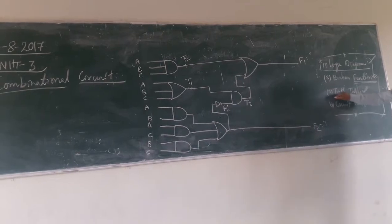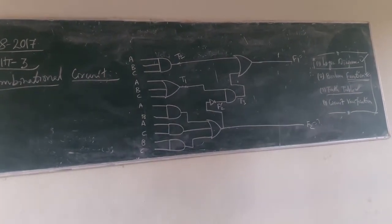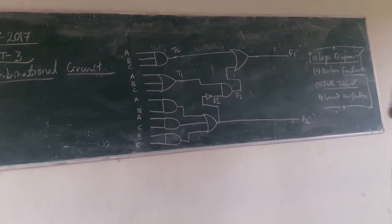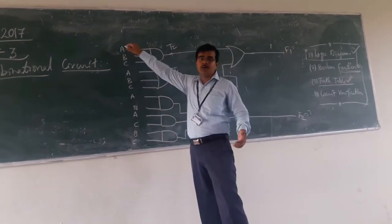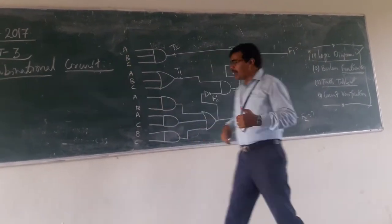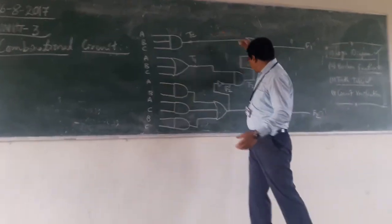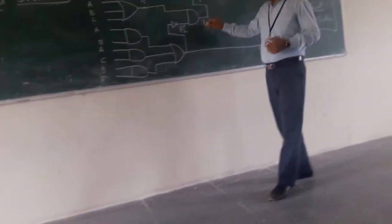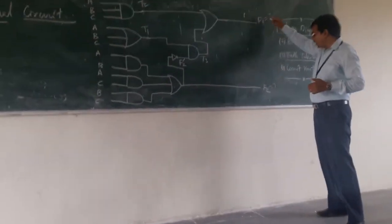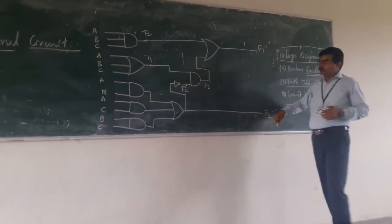Then you have to go for designing the truth table. Truth table means you will have the input A, B, C; you will have some other intermediate points like T1, T2, T3, and F2 dash; and your output F1 and F2.